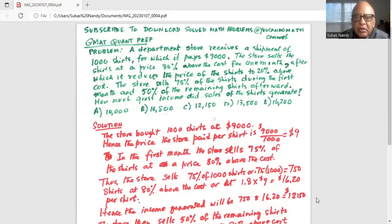A department store receives a shipment of 1,000 shirts for which it pays $9,000. The store sells the shirts at a price 80% above the cost for one month, after which it reduces the price of the shirts to 20% above the cost.